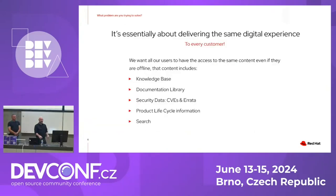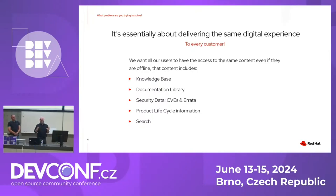Speaking of content, what type of content are we talking about here? Stuff like your knowledge base, your product docs, security data like CVEs, product lifecycle information — and then all of that stuff needs to be searchable because it's a huge amount of content. So they need to be able to search it too, and that search also has to be offline.